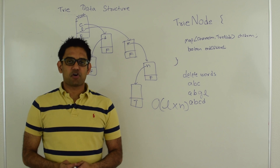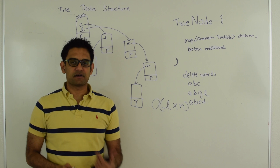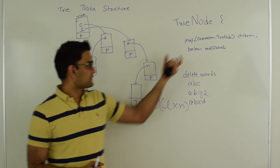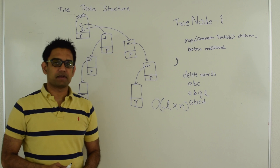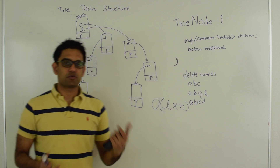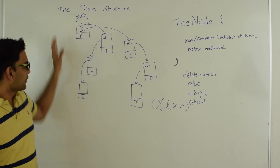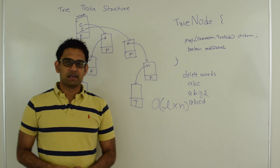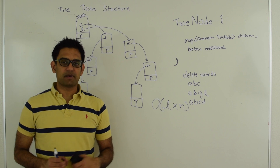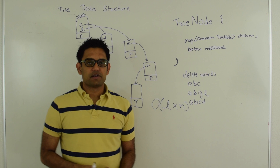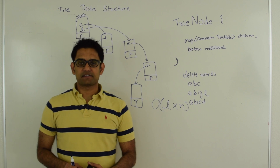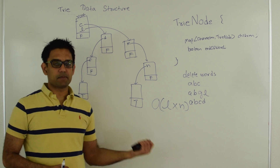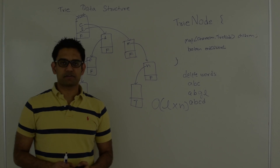This is all I have to say about Trie. There are tons of applications of Trie, like prefix-based searching. If the values in the map can be stored in a sorted format, we can also sort the entire Trie lexicographically. There are many applications that use Trie and we can discuss those in another video. Next let's look at the code implementation for the Trie data structure.